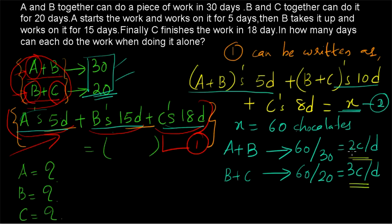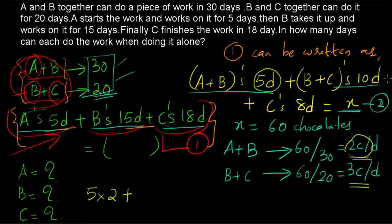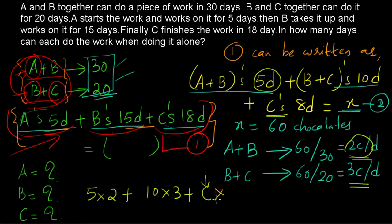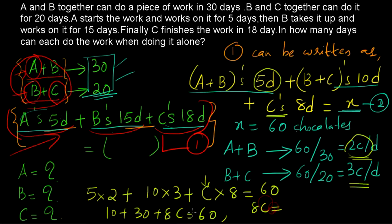A+B work for 5 days at 2 chocolates per day, giving 5×2 = 10 chocolates. B+C work for 10 days at 3 chocolates per day, giving 10×3 = 30 chocolates. C alone works for 8 days at an unknown rate C, giving 8C chocolates. So: 10 + 30 + 8C = 60. Therefore 8C = 60 − 40 = 20, giving C = 20/8 = 5/2 chocolates per day.